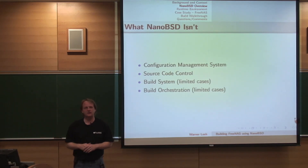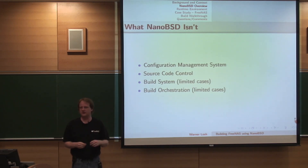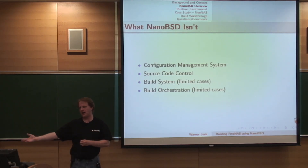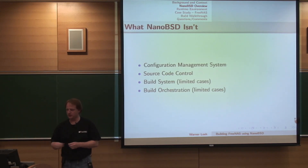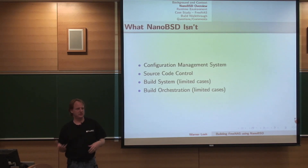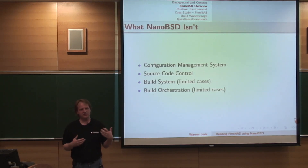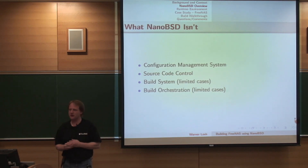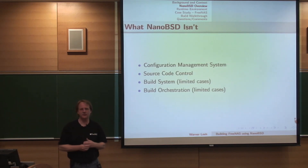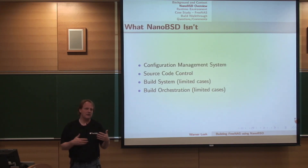One example with FreeNAS is that we use a build system that creates a cvsup file, cvsups FreeBSD, patches it, builds it, gets the image, and then repackages the image onto a root-only CD. It's kind of a build system, but it kind of isn't. If you have a third-party set of programs you want to build, that can be problematical with NanoBSD. There are hooks in certain spots that work really well for simple cases, but as things get more complicated they can start to become problematical.